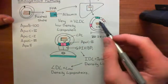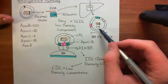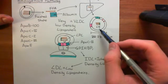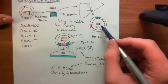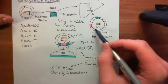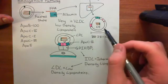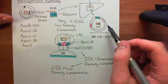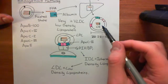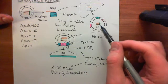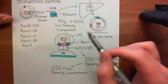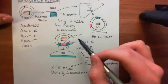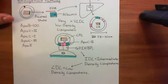In addition, in the lipid core, you also have cholesterol esters. These very low-density lipoproteins, as they're called, then go into the blood, and they are going to deliver the triacylglycerols to the skeletal muscle tissue and to the cardiac muscle tissue.